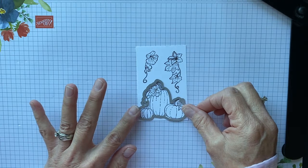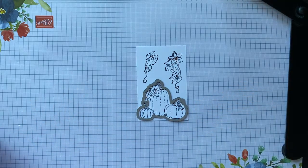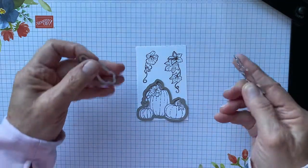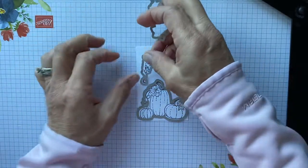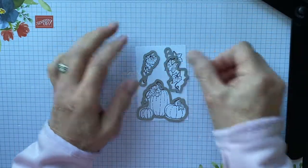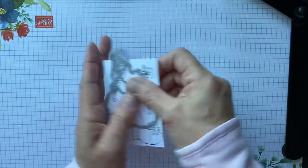And then you're going to go and take them through your stamp cut and emboss machine, your Big Shot, whatever you happen to have, and all of these line up perfectly.